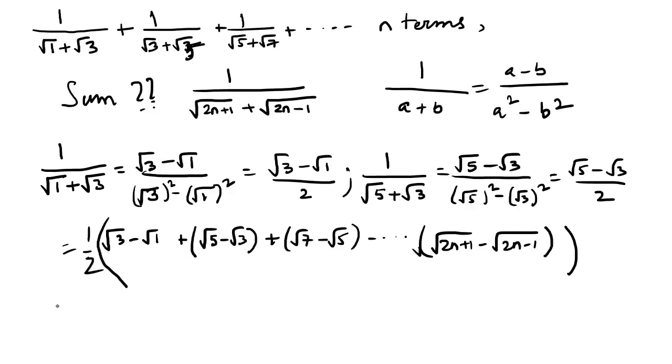So you can see where the pattern is going. Everything will get cancelled: root 3 minus root 3, root 5 minus root 5, and so on. So what will remain is that the answer will be root 2n plus 1 minus 1, divided by 2.